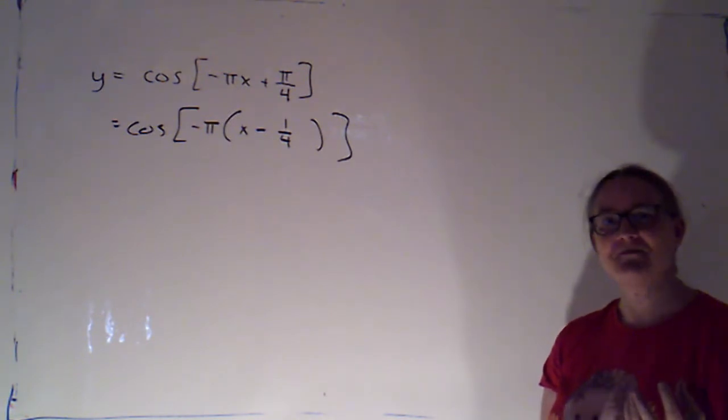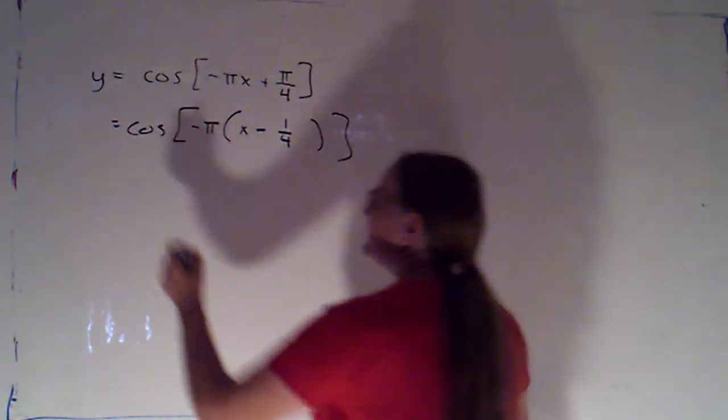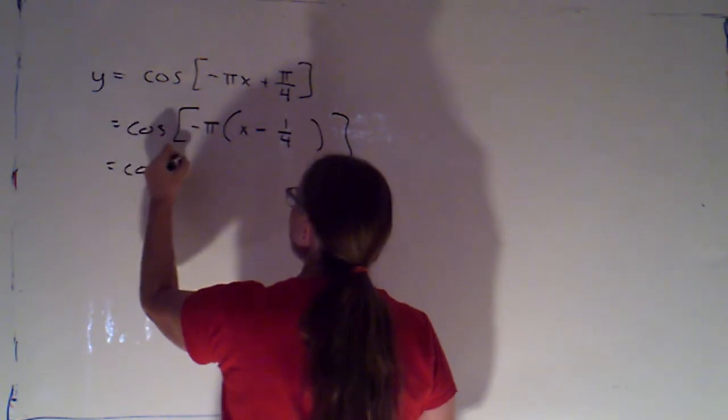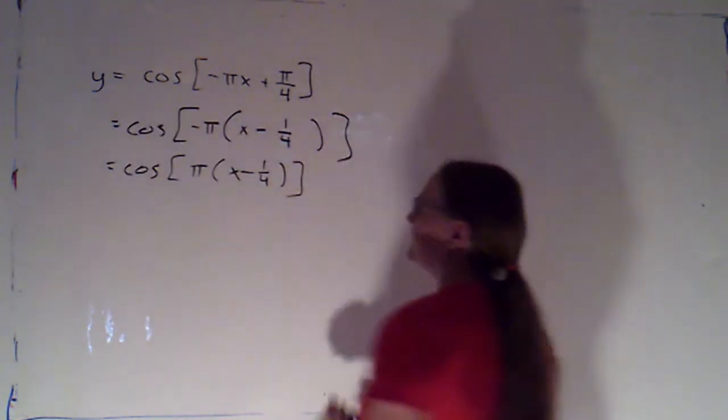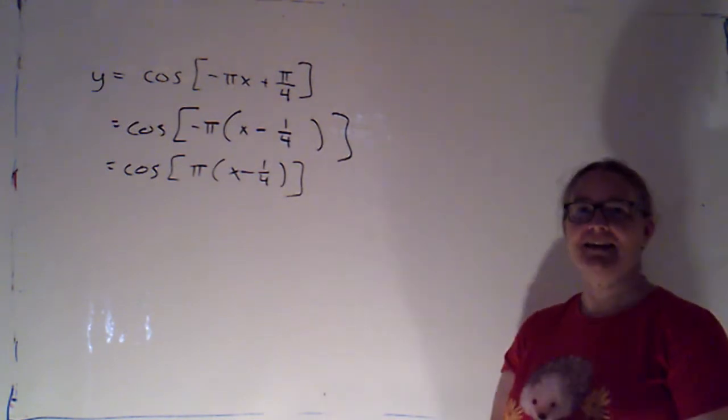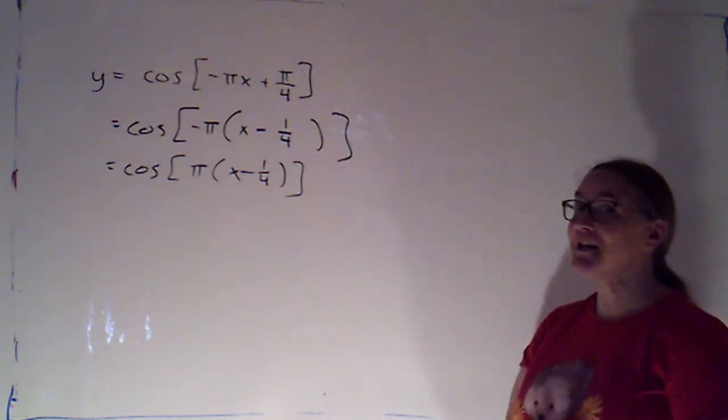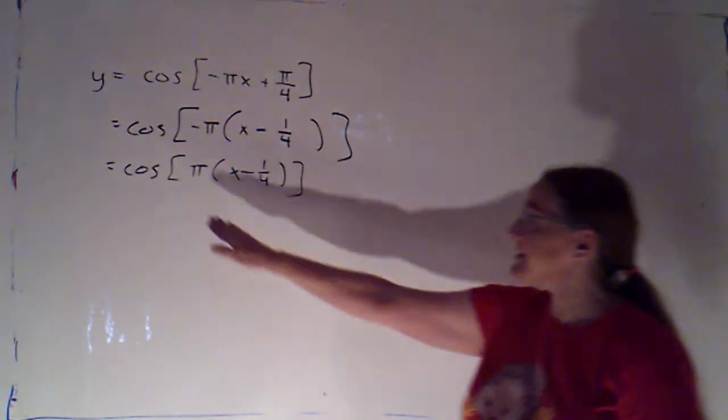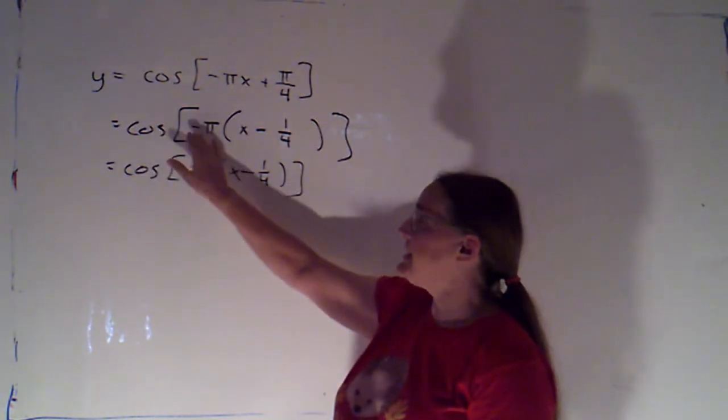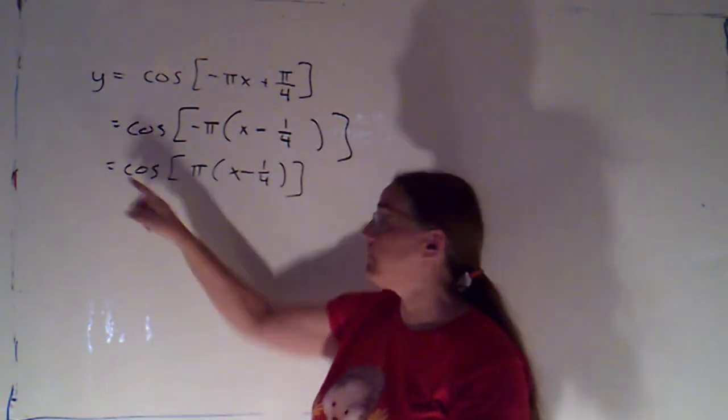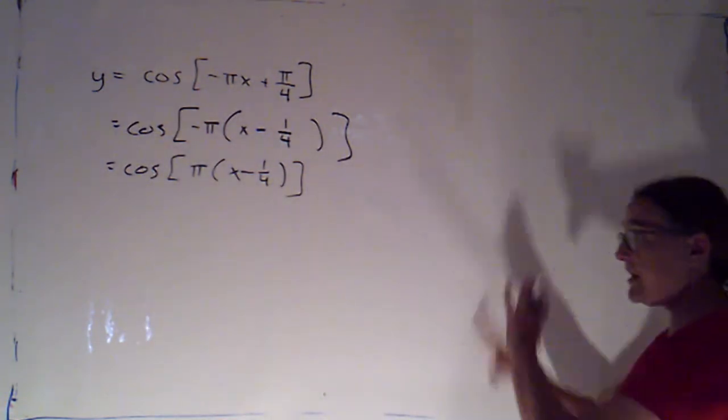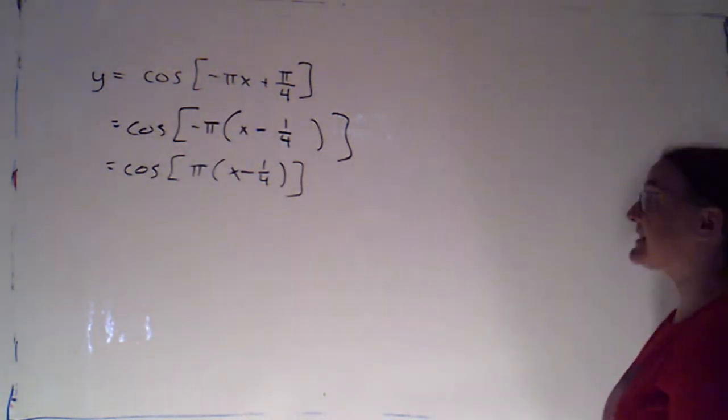But cosine is even. Opposite input gives me the same output. So, I don't have to deal with that negative sign. Really nice. If this were a sine, I would deal with the negative sign by saying opposite input gives me the opposite output. And I would move the negative to the front. But with cosine, it just goes away. That's lovely.